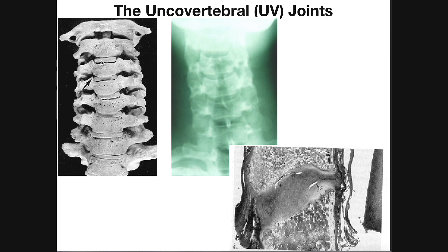Functionally, the most important thing about these uncinate processes is that as they grow, they start to create horizontal fissures in the intervertebral discs. For example, in the intervertebral disc between C3 and C4, we would start to see fissuring in this disc horizontally from the edges — from the parts of the disc that are more or less in contact with the uncinate processes.